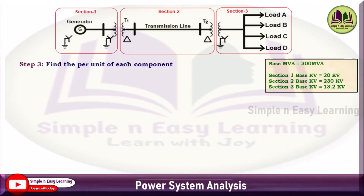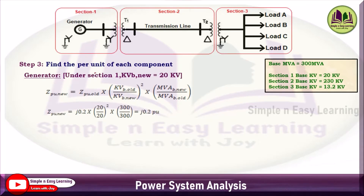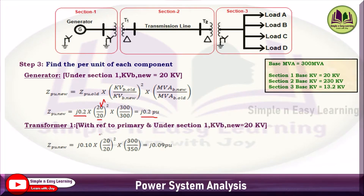Step 3: Find the per unit value of each component. For the generator (Section 1, base kV = 20 kV), apply: Z_pu_new = Z_pu_old × (kVB_old/kVB_new)² × (MVA_B_new/MVA_B_old). Substituting: j0.2 × (20/20)² × (300/300) = j0.2 pu. For Transformer 1 (Section 1 primary, base kV = 20 kV): j0.10 × (20/20)² × (300/350) = j0.09 pu.